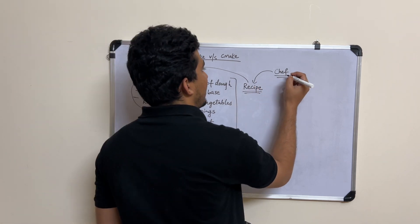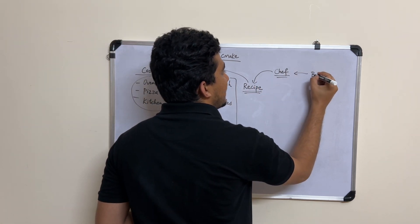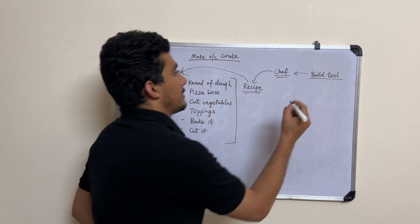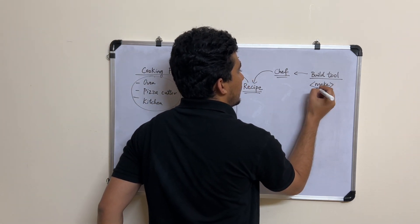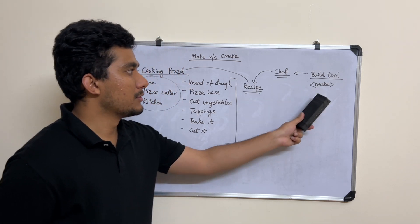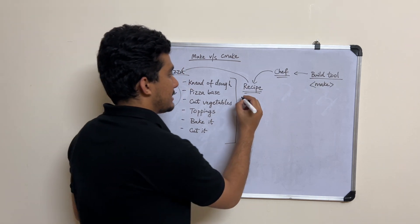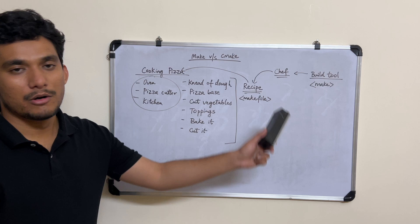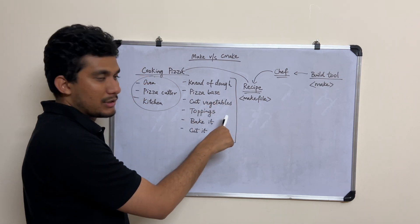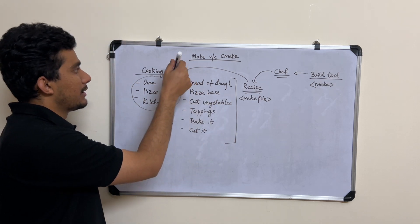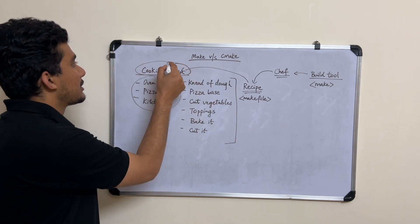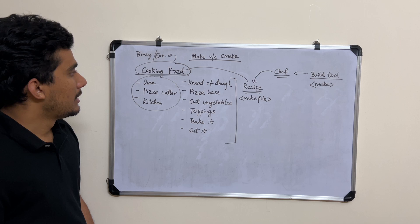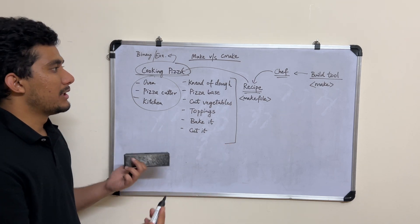Now if we try to relate this example with Make and CMake: your chef can actually be considered as a build tool, and that build tool is your Make. Make uses a recipe, and here the recipe is your Makefile. The Makefile has instructions using which it will be able to get the pizza cooked — and here your pizza would actually be your binary or your executable.